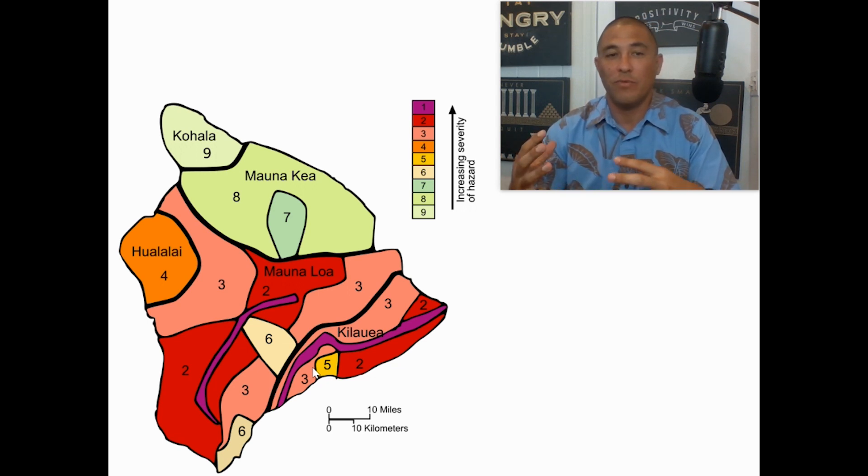So it doesn't necessarily mean your proximity to the actual lava is different than your hazard of it actually touching your piece of property. That's something you got to understand when you're choosing where you're going to live and what your lava zone is. You can look at this map. I get asked all the time what's an easy way for me to look online and see what lava zone a property is in.